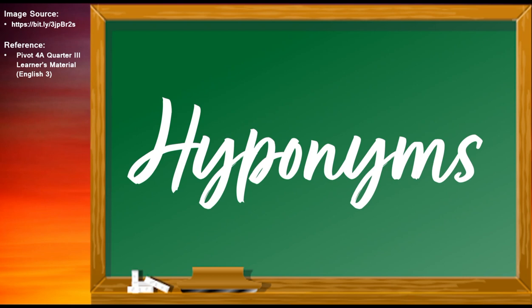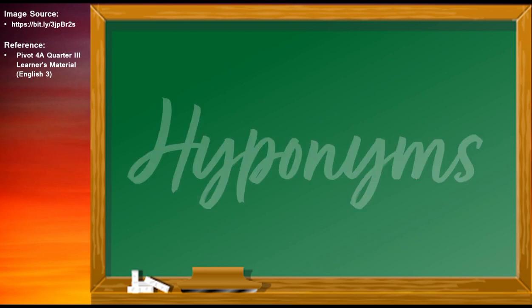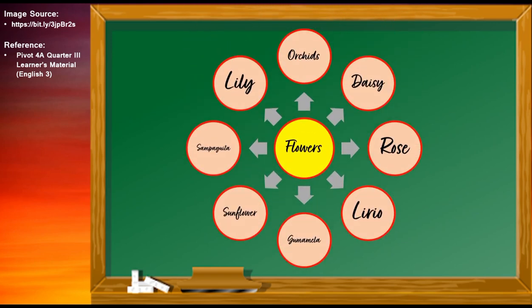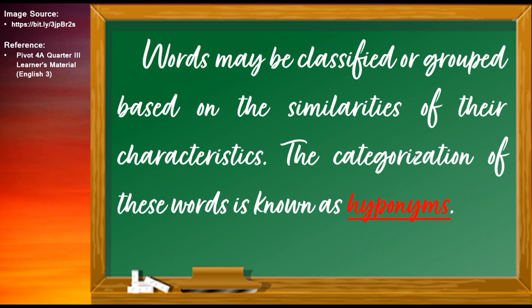For the last part of our lesson, it is about hyponyms. Categorizing words is a good strategy in increasing your vocabulary. Words may be classified based on their specific groups. These classifications will help you understand the common characteristics of certain items. For example, orchids, daisy, rose, lilio, gumamela, sunflower, sampaguita, and lily form one group — they are all categorized as flowers. The categorization of these words is known as hyponyms.